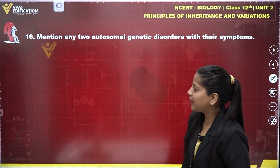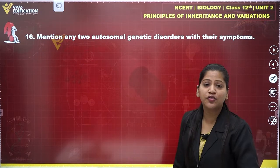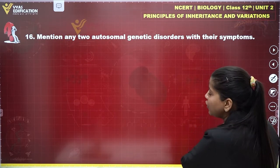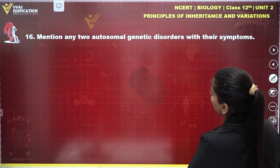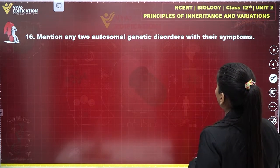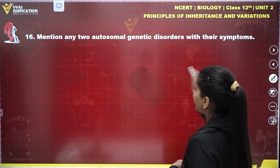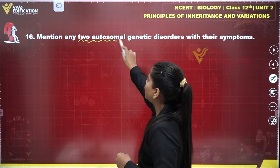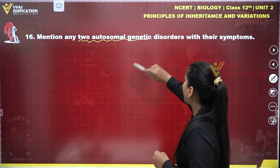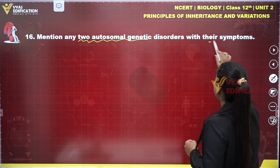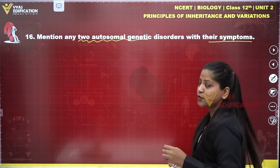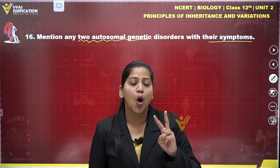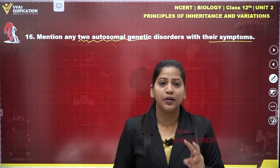Now let's move on to the last question of this chapter: mention any two autosomal genetic disorders along with their symptoms. So we have to mention two autosomal genetic disorders and their symptoms.